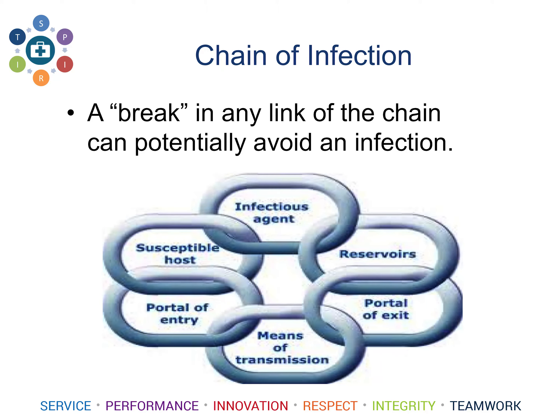This is the chain of infection. A break in any link of the chain can potentially prevent disease. Using influenza as the infectious agent: the flu can live in humans and animals, so removing the reservoir — a sick human or animal — can prevent infection. We also have a portal of entry and portal of exit. Giving a symptomatic patient a surgical mask reduces the portal of exit, and washing our hands addresses the portal of entry. People visiting healthcare institutions are often susceptible hosts because they are already sick.